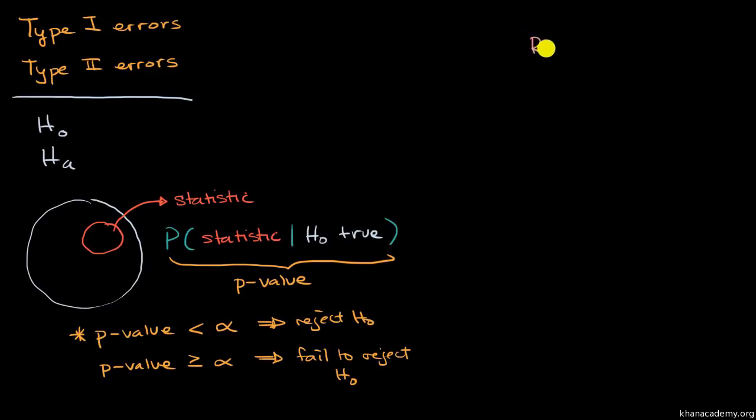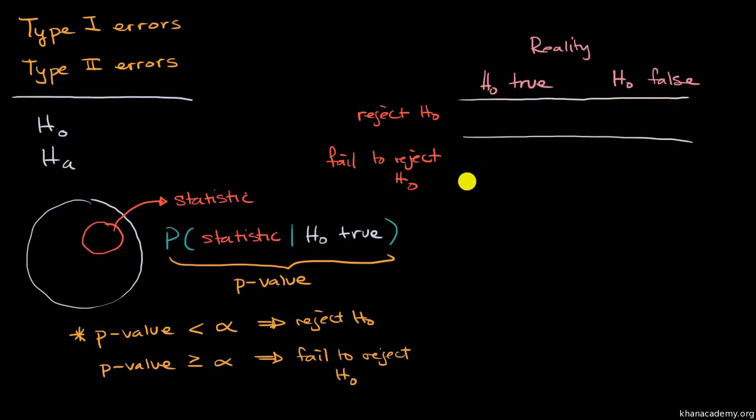Let's make a grid to make this clear. So there's the reality. So the reality is, there's two possible scenarios in reality. One is that the null hypothesis is true, and the other is that the null hypothesis is false. And then based on our significance test, there's two things that we might do. We might reject the null hypothesis, or we might fail to reject the null hypothesis. And so let's put a little grid here to think about the different combinations, the different scenarios here.